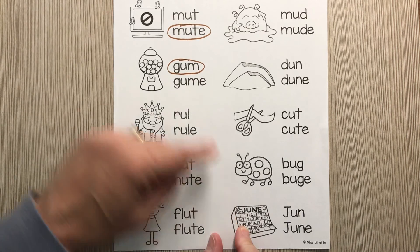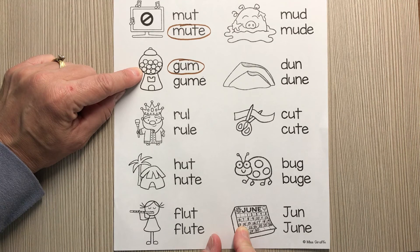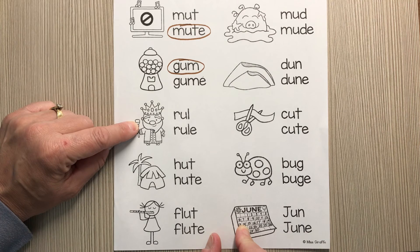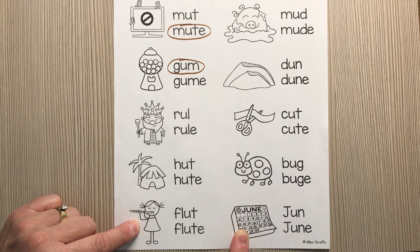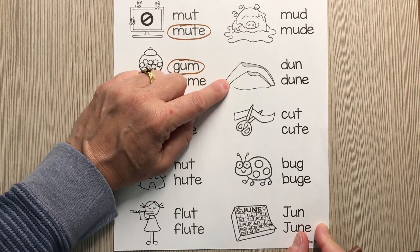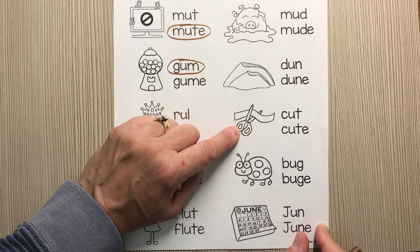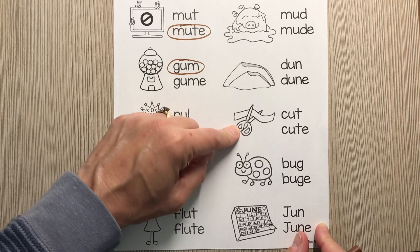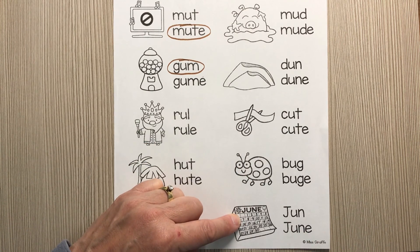Let me go back through the answers. Here we want 'mute.' Here we want 'gum.' Here we want 'rule.' Here we want 'hut.' Here we want 'flute.' Here we want 'mud.' Here we want 'dune.' Here we want 'cut.' Here we want 'bug.' And here we want 'June.'